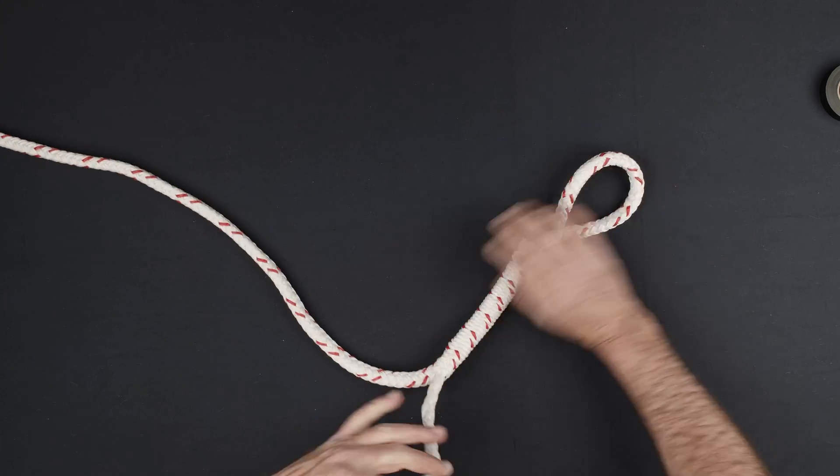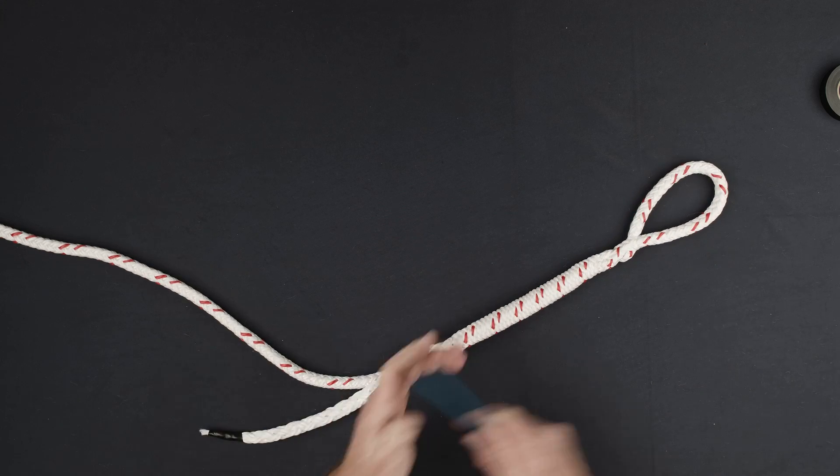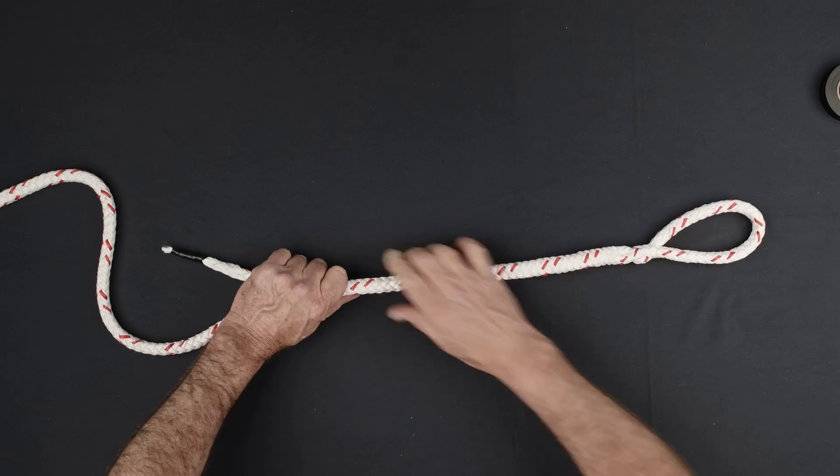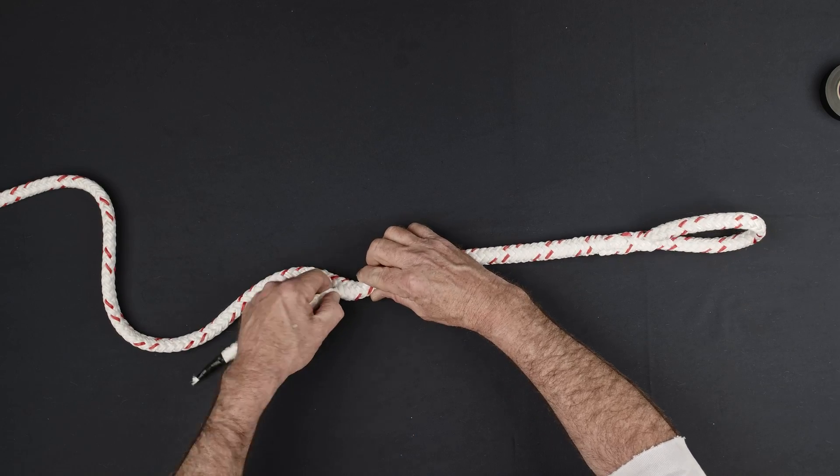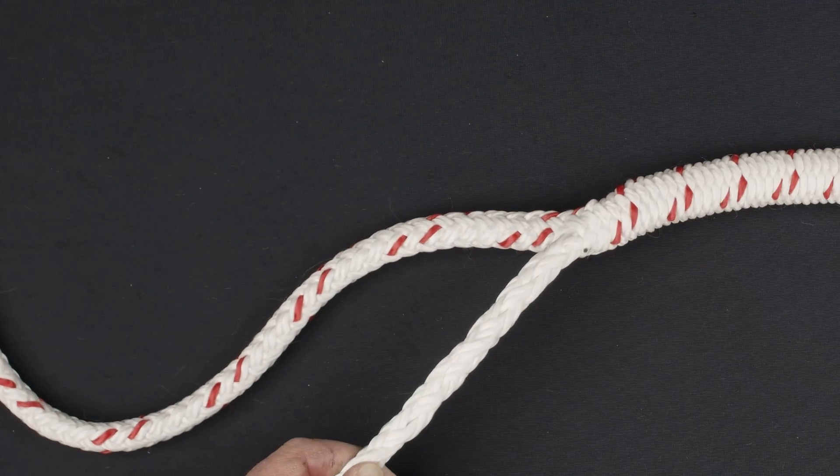Be sure the first and second eye marks are aligned and tighten the brummels by pulling on the tail against the eye. Milk the slack out of the splice to find the location the tail will need to be cut. Grab the tail at the location it exits the splice and extract a short length.